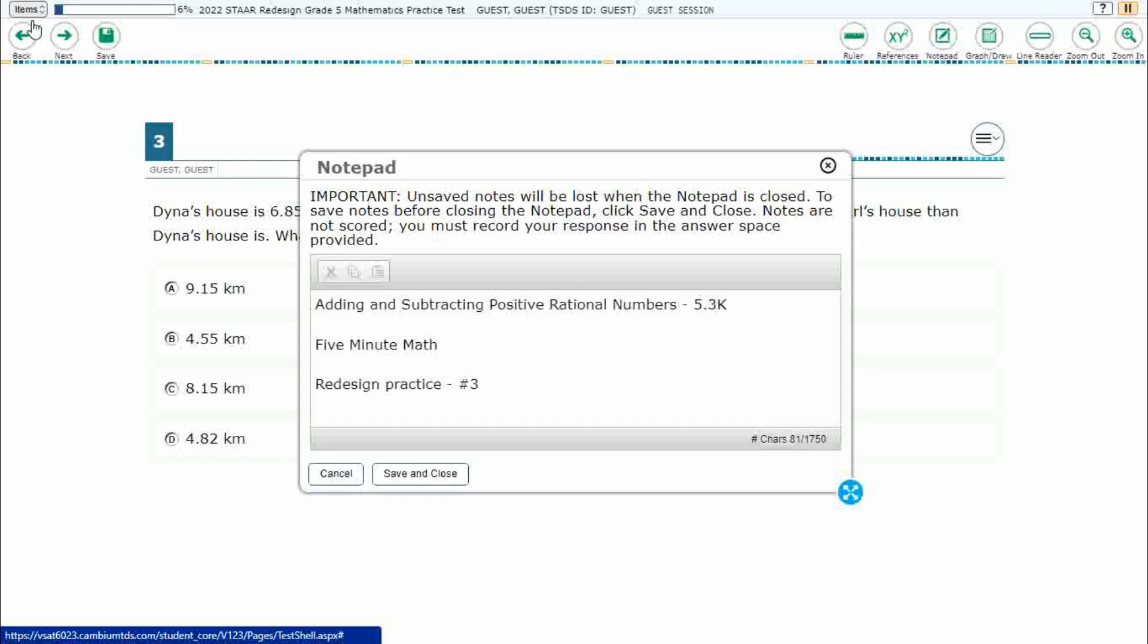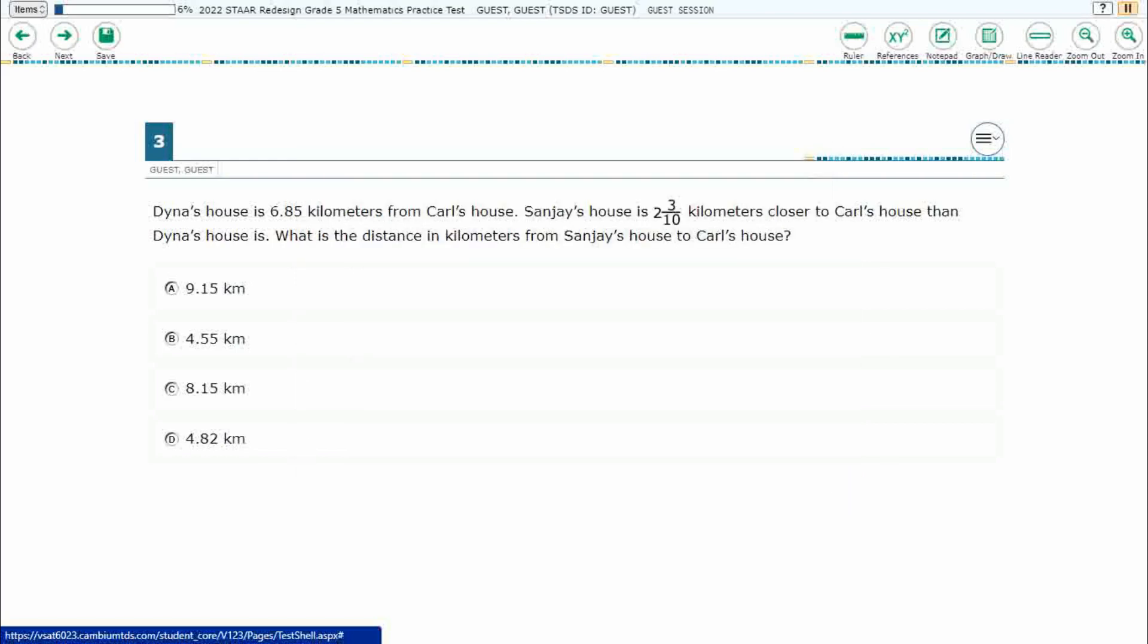Hello and welcome to 5-Minute Math. Today we are looking at the fifth grade concept of adding and subtracting positive rational numbers. This is standard 5.3K in the great state of Texas and we are using item number three from the redesigned practice online STAAR test.